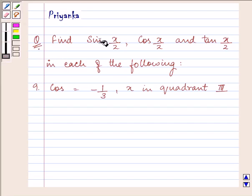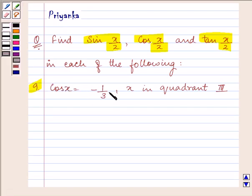It says find sin(x/2), cos(x/2), and tan(x/2) when the value of cos(x) is given to us as -1/3 and also x is in quadrant III. Let us start with our solution.